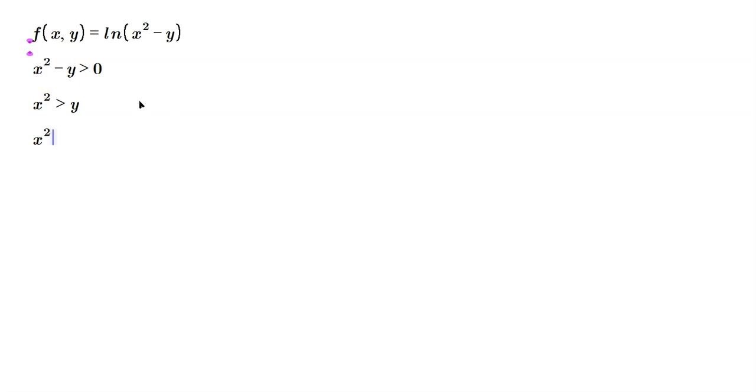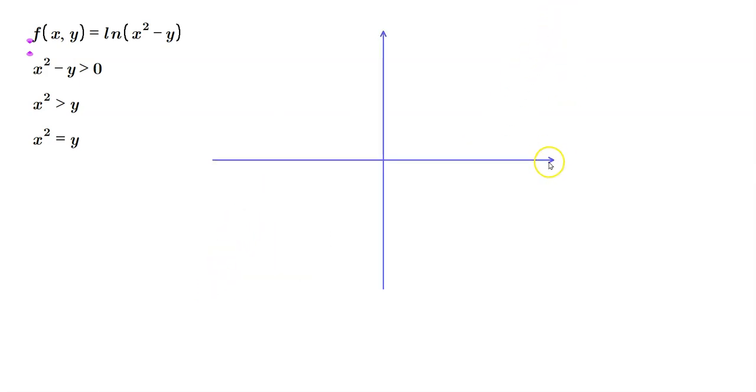What I mean is this: I draw a coordinate system here. It doesn't have to be perfect. Now think about x² equals y. Of course, this is a basic parabola, right? Parabola.